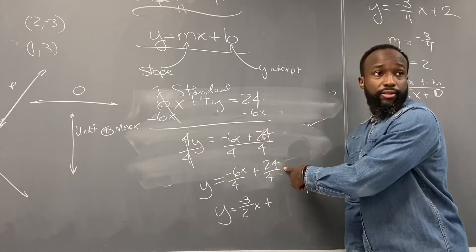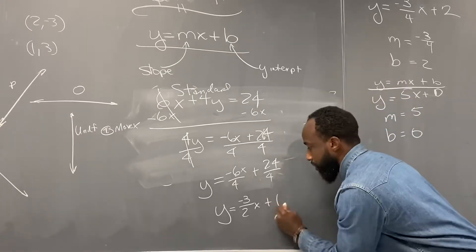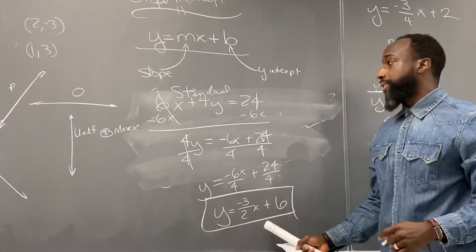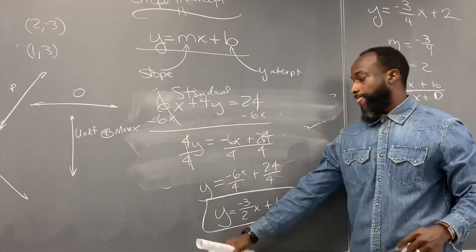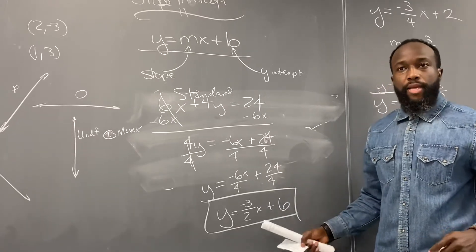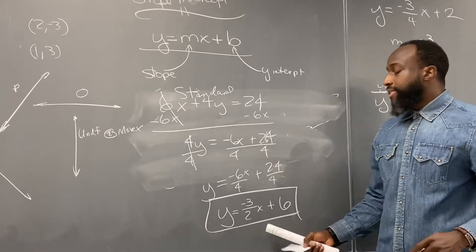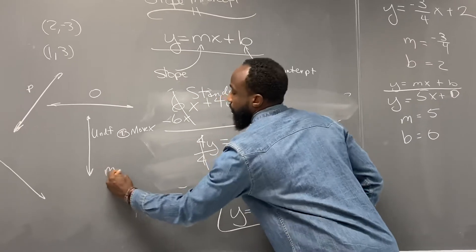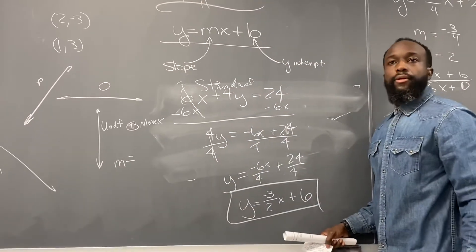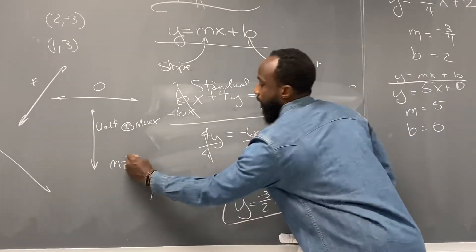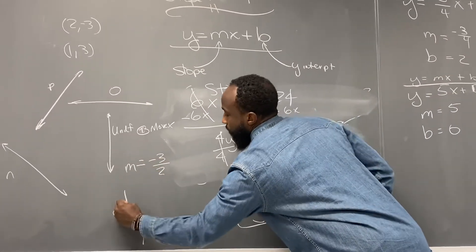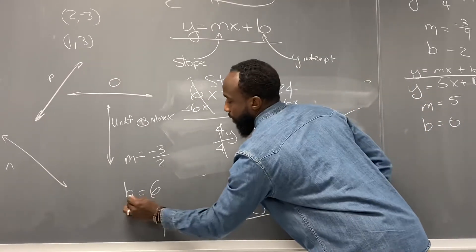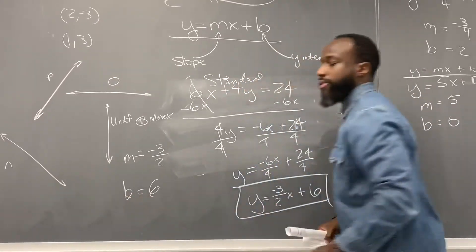24 over 4 equals six. So y equals negative 3 over 2 x plus 6. Now it's in slope intercept form. The slope M is negative 3 over 2, and the y-intercept B is six.